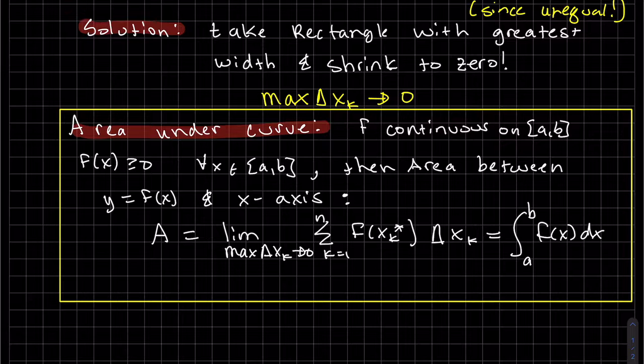What we get is the area under the curve when we have a continuous f and the function is greater than zero on [a,b]. This is a symbol for all x between a and b that the function is greater than zero. Then the area between the function and the x-axis, between a and b, equals the limit of max delta x_k approaching zero of the series f(x) times delta x, which equals the integral from a to b of f(x) dx. Since the function's positive, this is the area.